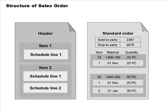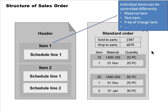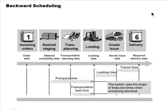Individual items in a sales order can be controlled differently. Each item can be designated as a material item, a text item, or a free-of-charge item. For example, when sending a sample to a customer it would be a free-of-charge item, and the system won't calculate any price for it.